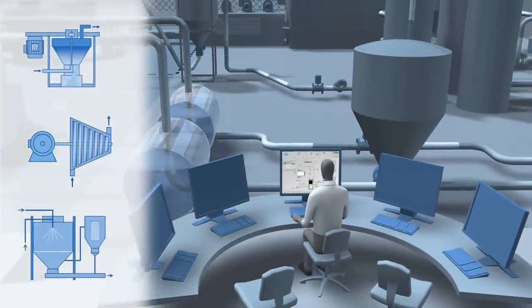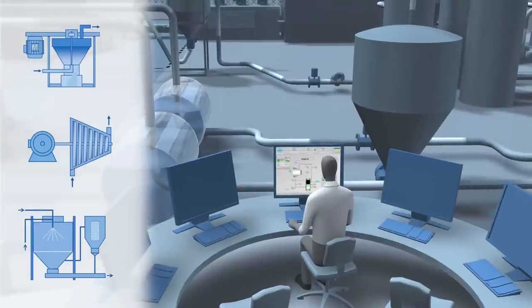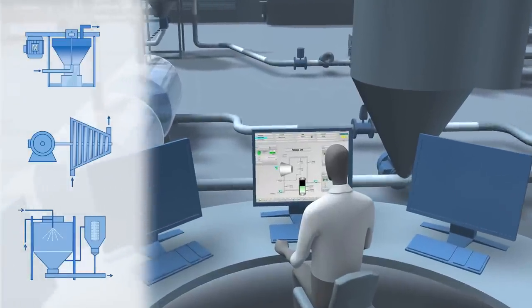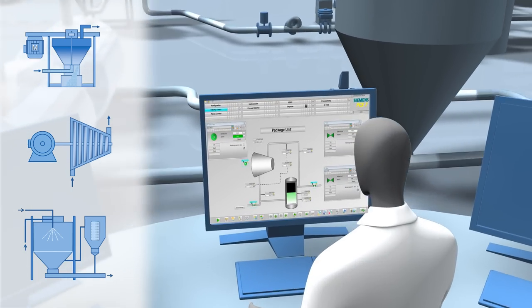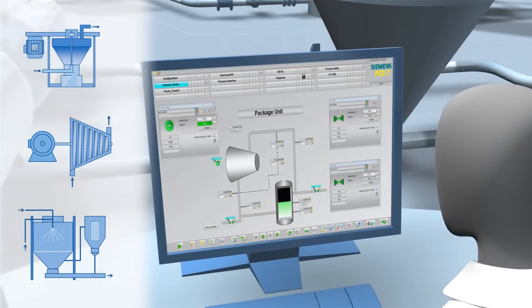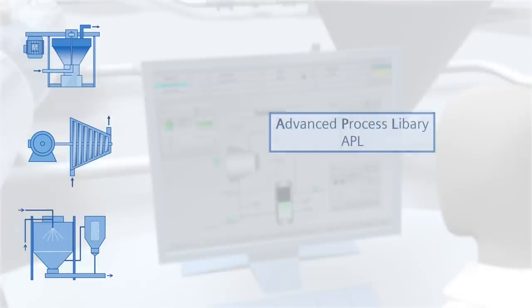A clear case for the SIMATIC PCS 7 Industry Library. The Industry Library is a technological library that supplements the standard library in the SIMATIC PCS 7 process control system.